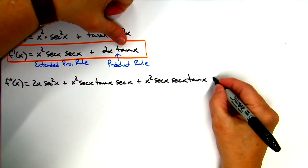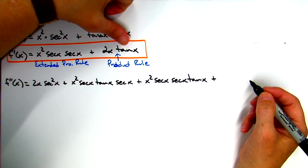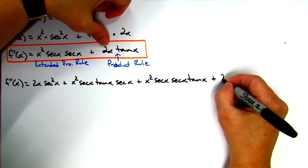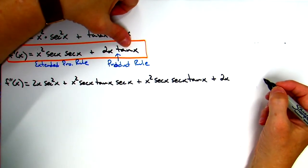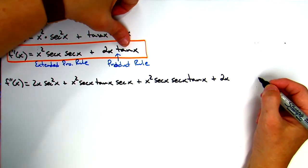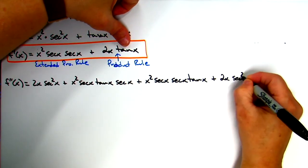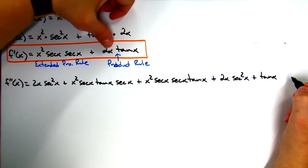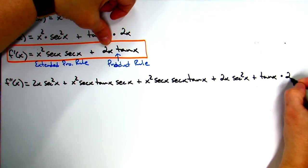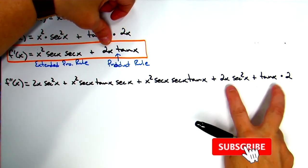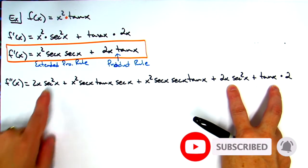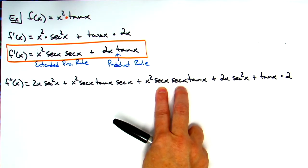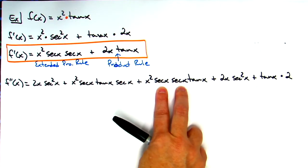Now for the product rule on the right side: first term is 2x, times the derivative of tangent, which is secant squared. Plus the second term, tangent, times the derivative of 2x, which is 2. Product rule on the end was easy compared to the first one. I already wrote some terms as secant squared — I can write these as secant squared as well, so let's do that to see all our secant squareds.